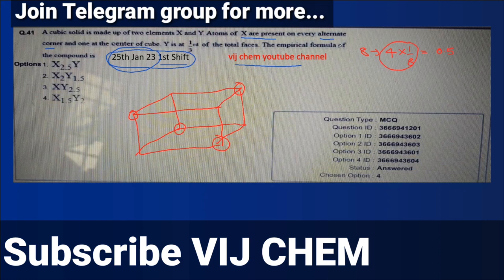Now coming to one at center of the cube, so that means one corner and one center and contribution is one. So total number of X are 1.5.